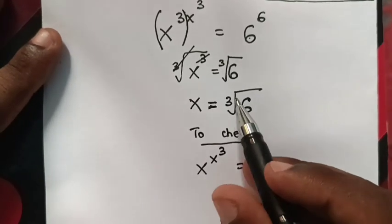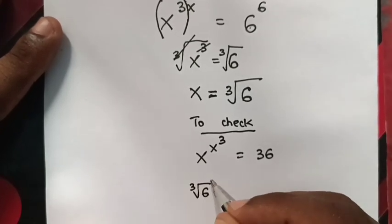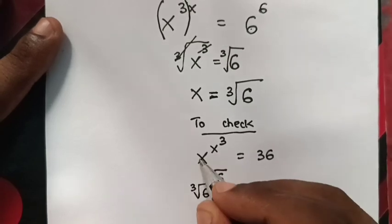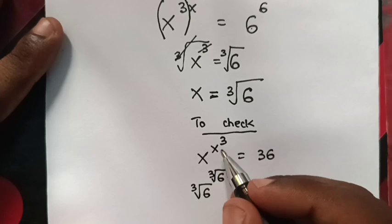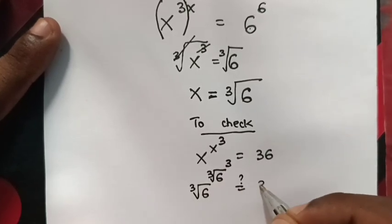We substitute the value of x which is ∛6. This is the value of x for the base and for the power, with power of 3 equals 36.